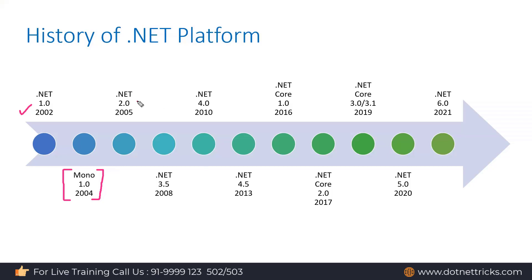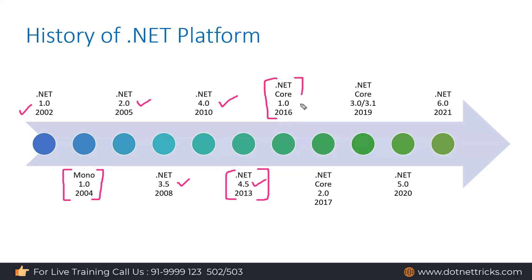Then we had .NET 2.0, 3.5, 4.0, and 4.5. Up until 4.5, the .NET Framework could run only on Windows. But starting from .NET Core 1.0, which was released in 2016, it can run on Linux, Mac, Ubuntu, and Windows. So now it is a cross-platform framework.